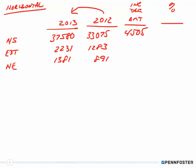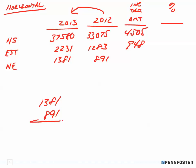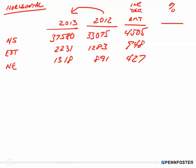For earnings before taxes: 2,231 minus 1,283 gives an increase of 948. For net earnings: 1,318 minus 891 gives 427. Those are the increase amounts for all three rows.